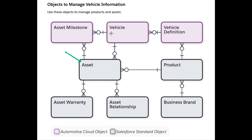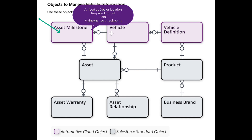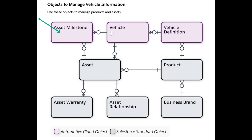Every vehicle is an asset, but assets are more than just vehicles. An asset milestone is a construct unique to Automotive Cloud, and it tracks key events in an asset's life cycle. For example, a series of events could be that it first arrived at a dealer's location, it then got readied and placed on the lot for customers to see and buy, it gets sold, and then it is tracked after being sold for when it comes back for maintenance and repairs.